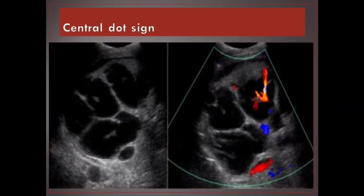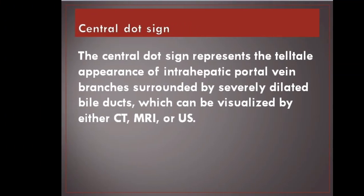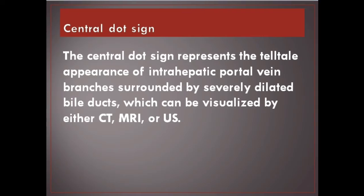Central dot sign. It represents the telltale appearance of intrahepatic portal vein branches surrounded by severely dilated bile ducts, which can be visualized by either CT, MRI, or ultrasound.